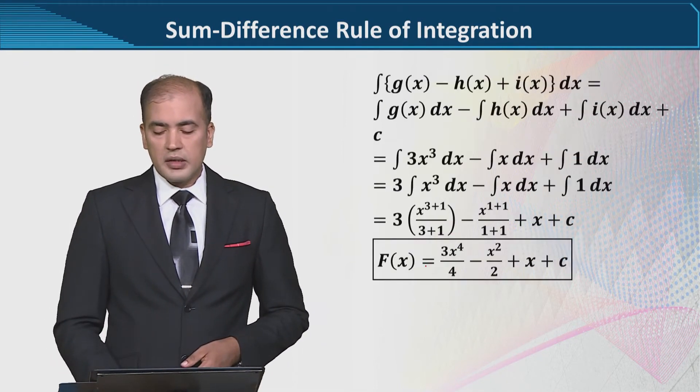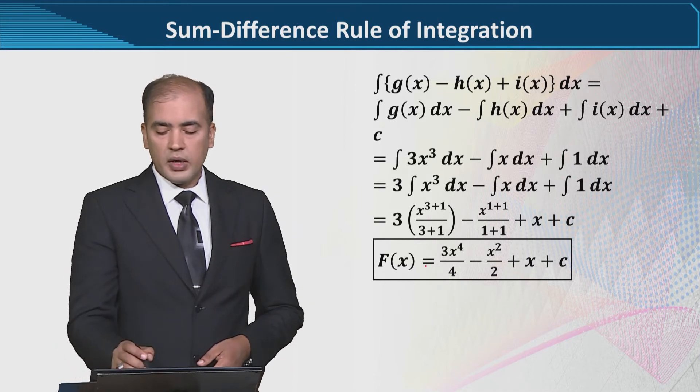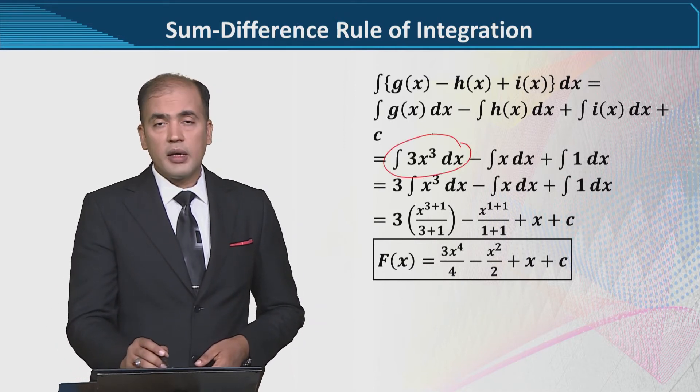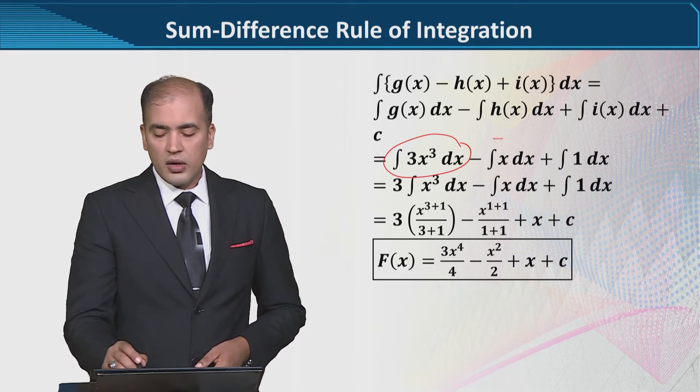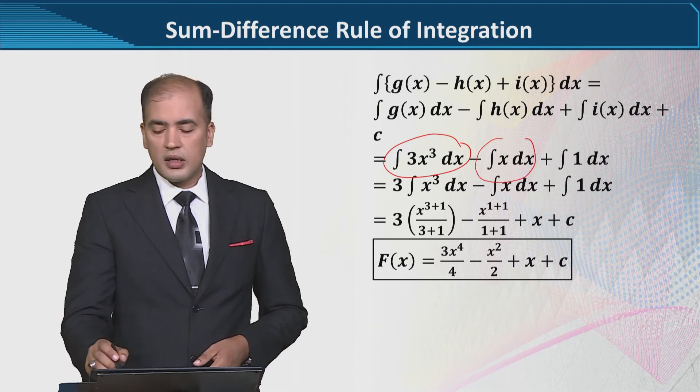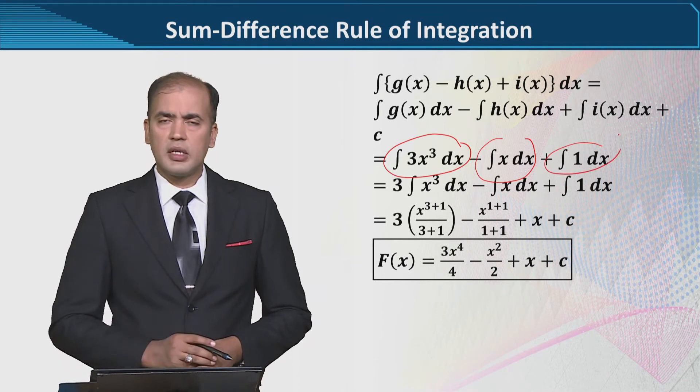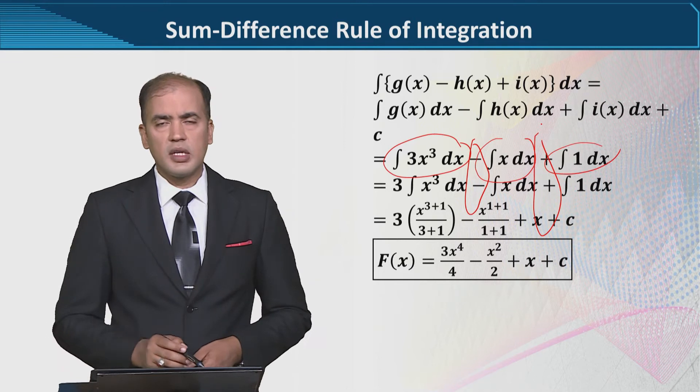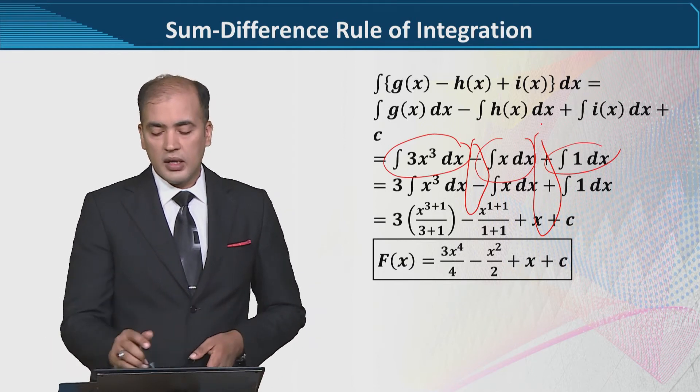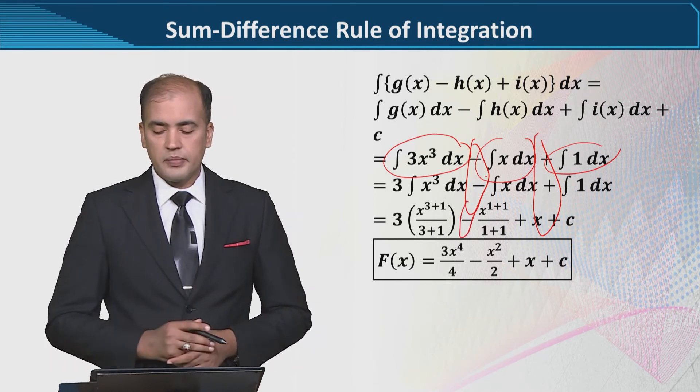There are three sub-functions. We can call them sub-functions because by combining them the overall function is being developed. So the method is the same, it is very easy, where we are seeing the first function's integral separately, then the second function's integral, and then the third function's integral. Whereas the signs, they are preserved, we are not changing them, they were minus and they are still the same, not changing.